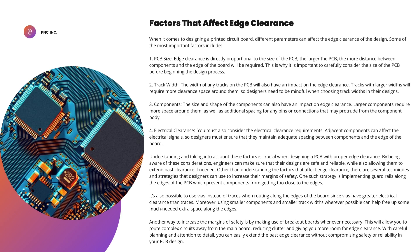Three, components — the size and shape of the components can also have an impact on edge clearance. Larger components require more space around them, as well as additional spacing for any pins or connections that may protrude from the component body. For electrical clearance, you must also consider the electrical clearance requirements. Adjacent components can affect the electrical signals, so designers must ensure that they maintain adequate spacing between components and the edge of the board. Understanding these factors is crucial when designing a PCB with proper edge clearance, allowing engineers to extend past clearance if needed.